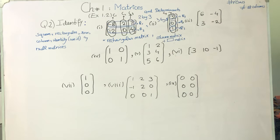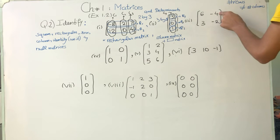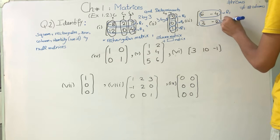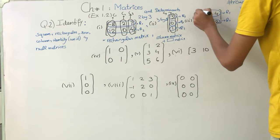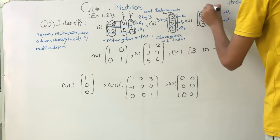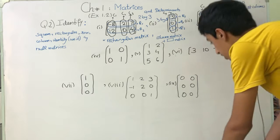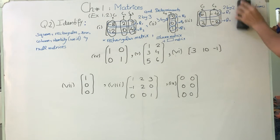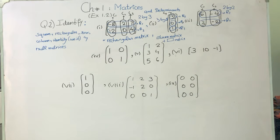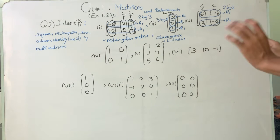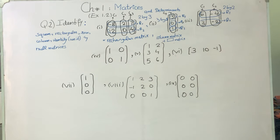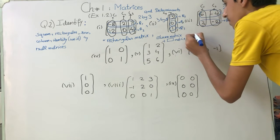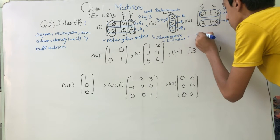The next matrix is [6, -4; 3, -2]. We count the rows: R1, R2, and the columns. The number of rows is equal to the number of columns, and it has a square shape. A square matrix is one whose number of rows and number of columns are equal. So this is a square matrix.